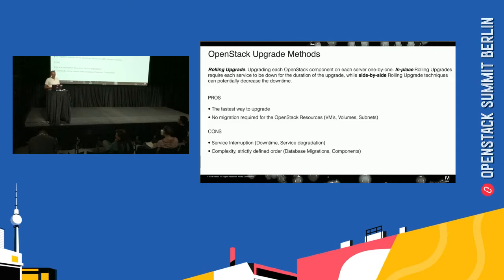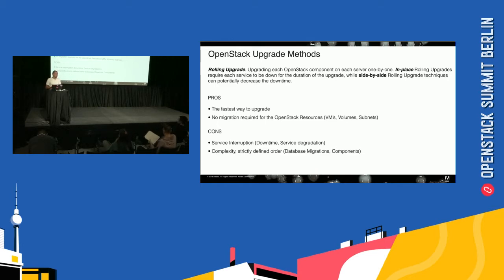Complexity is also a factor. If you're trying to upgrade something five years old to something up to date, you always have some challenges — compatibility issues and complexity — because every OpenStack deployment is different.